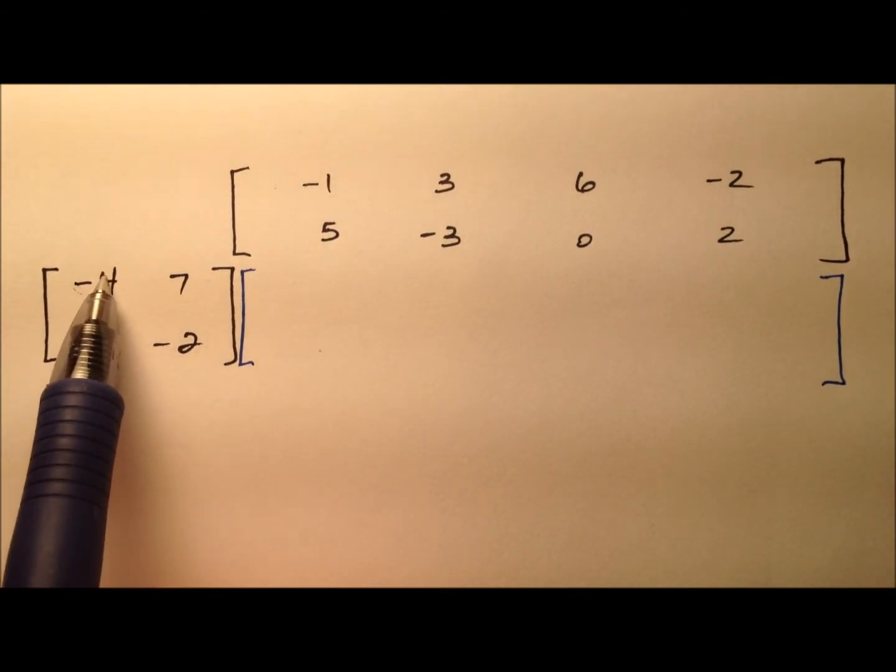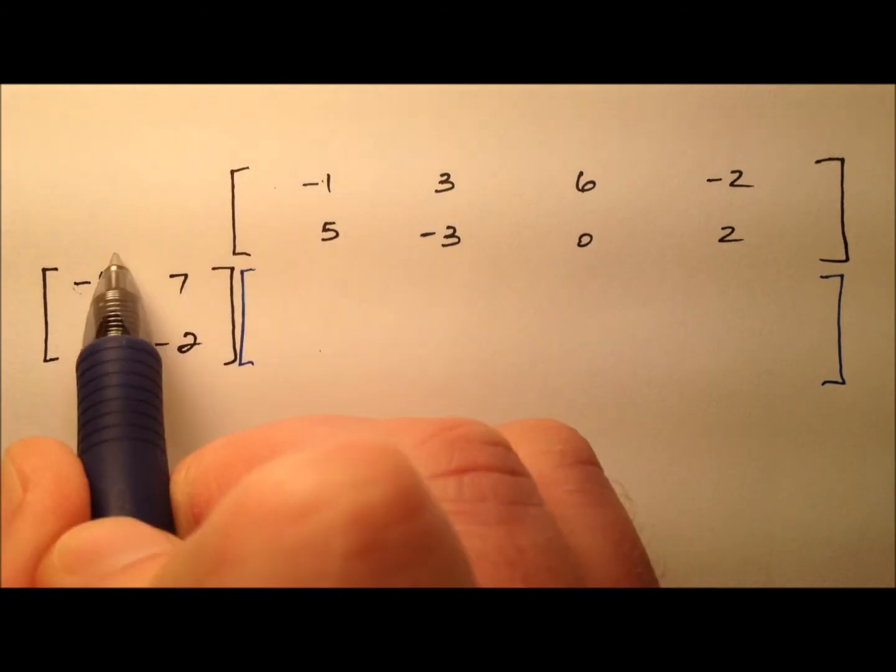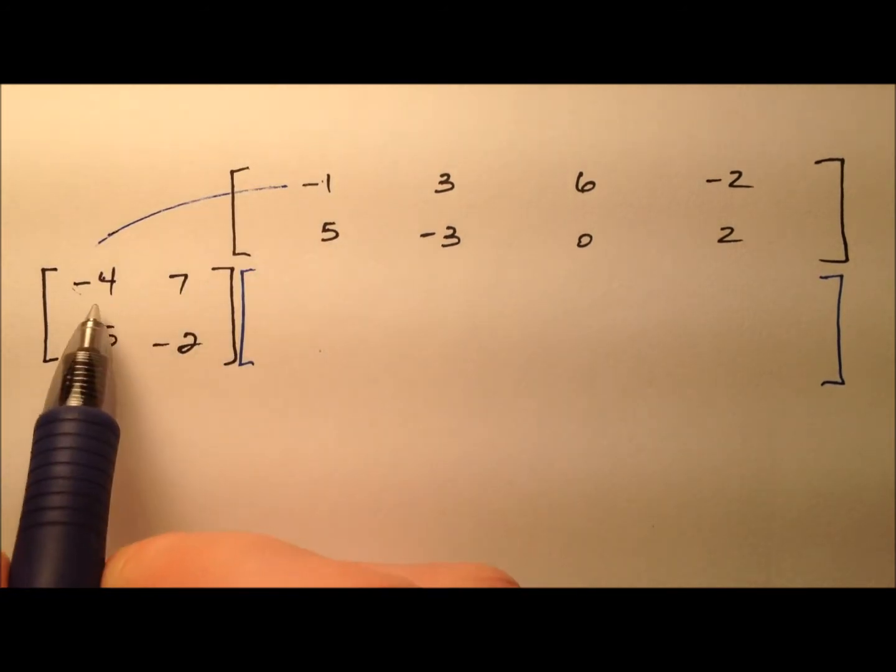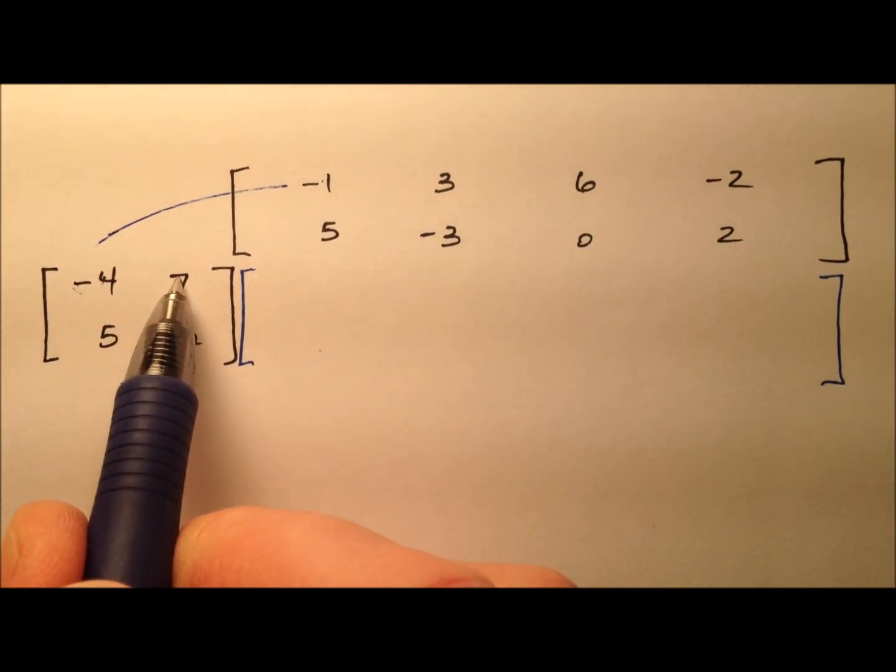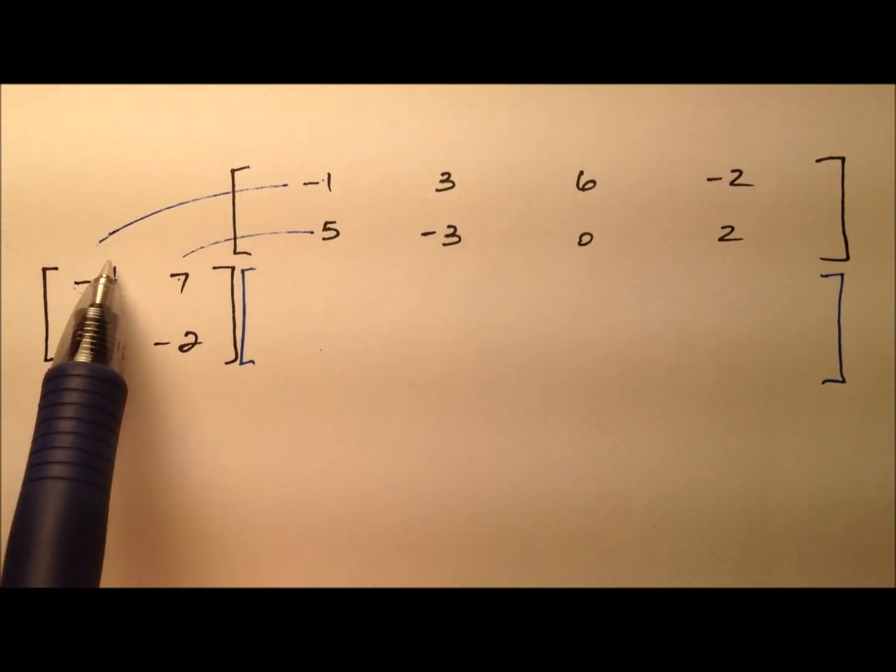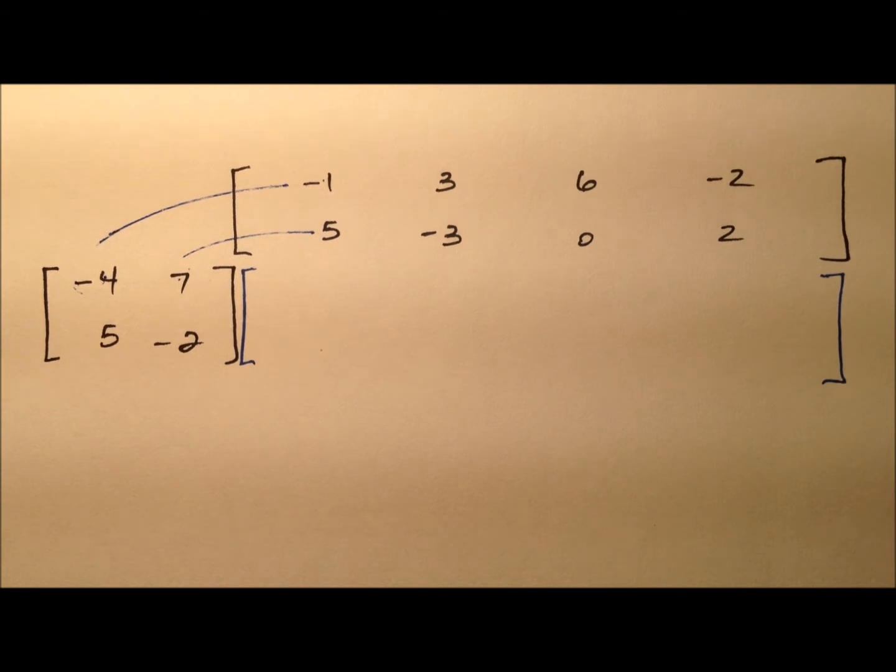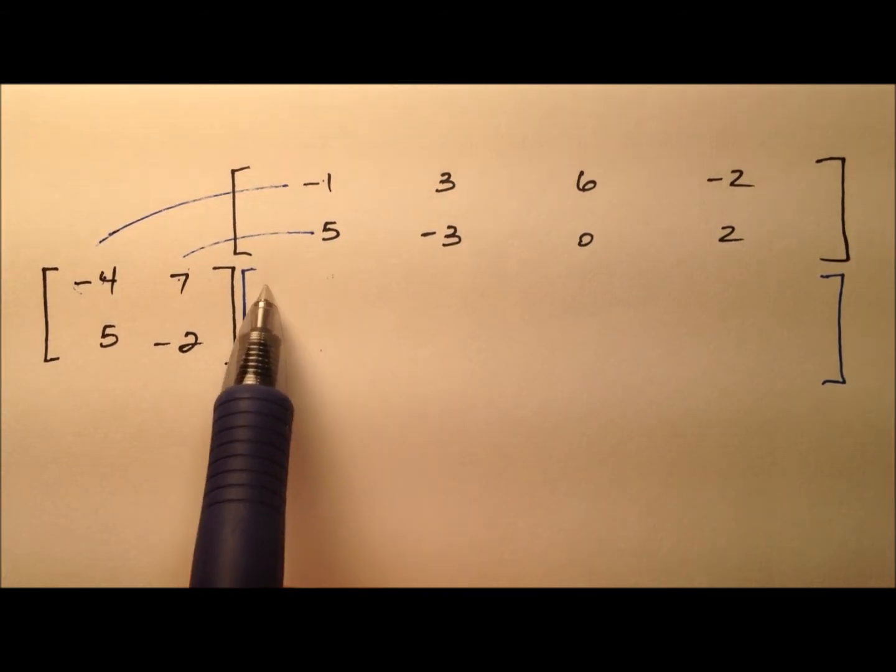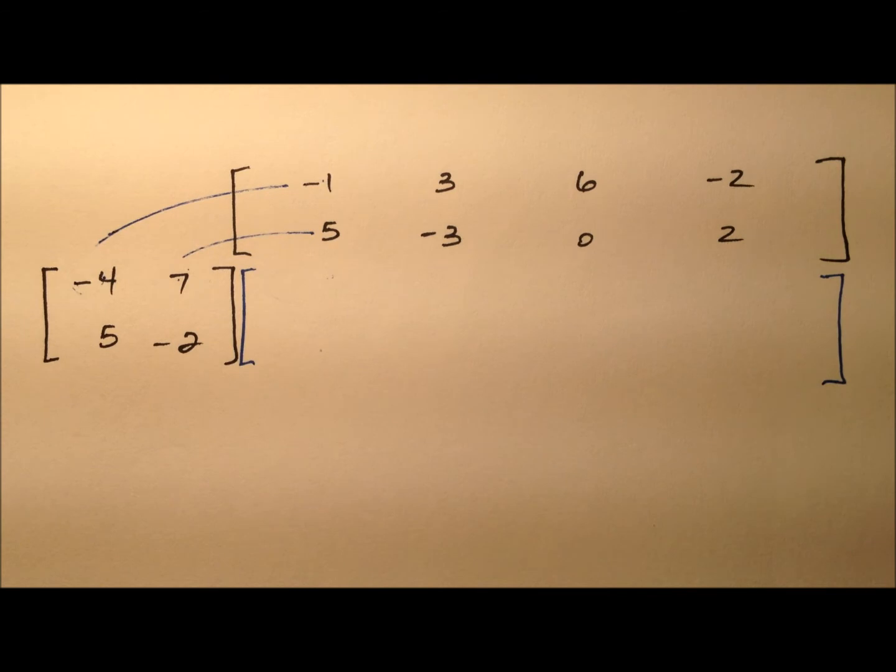We're going to take the first entry in this row and the first entry in this column and multiply them, and then we're going to move on, so the second entry in this row and the second entry in this column, and multiply them. And we'll have this series of multiplications, and then we're going to add all those products, and that will be each one of these entries.